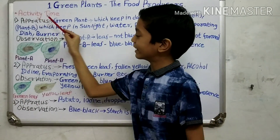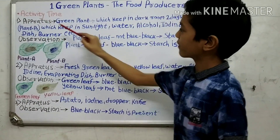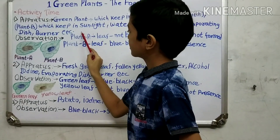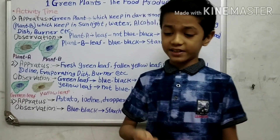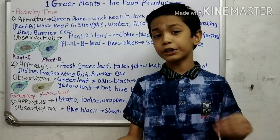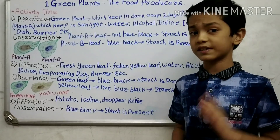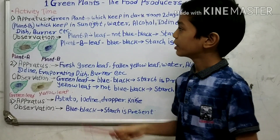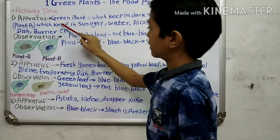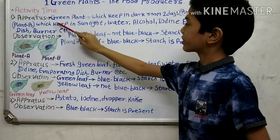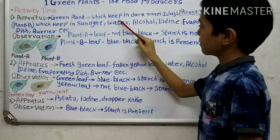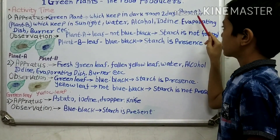In this section we have three activities to do. The first activity's aim is: can a plant do photosynthesis without sunlight? To do this activity, we will require a green plant that has been kept in a dark room for two days.